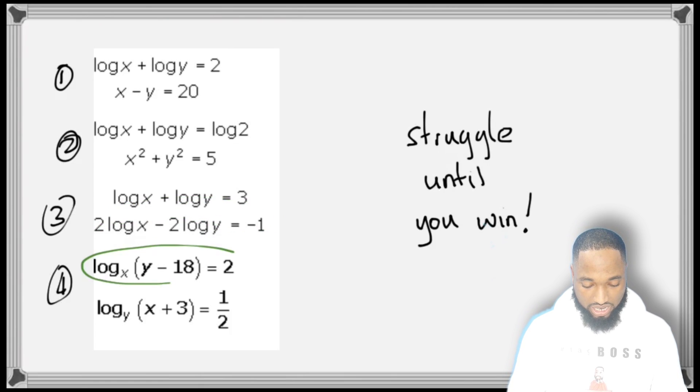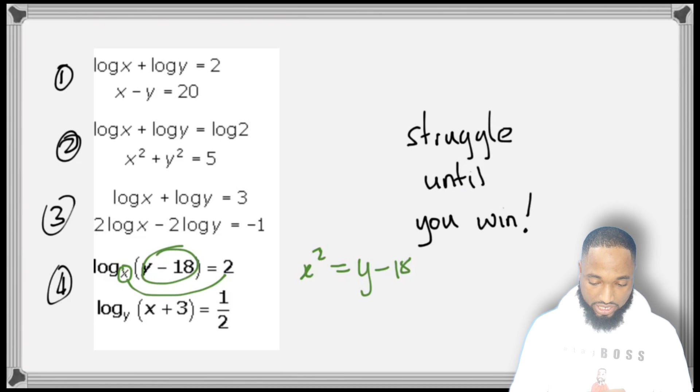This one looks a little confusing, but actually they start off further along, so you can just convert this to exponential form. This is going to be x squared equals y minus 18. You understand—the base squared is equal to this here.